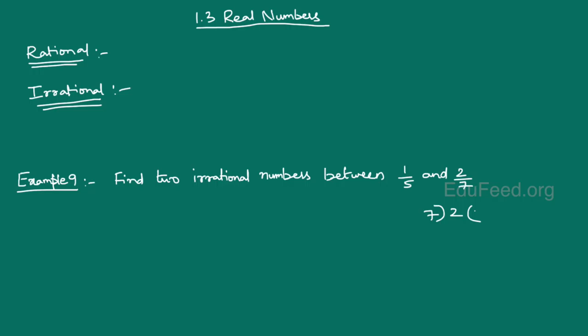1.3 Real Numbers. Let's recap what rational numbers are. A rational number is a number which can be represented in p by q form where q not equal to 0.